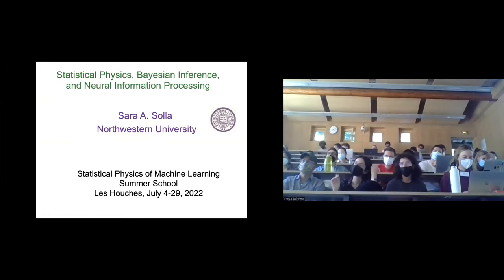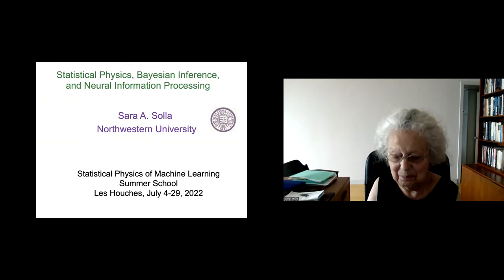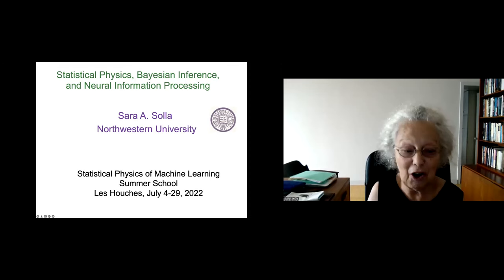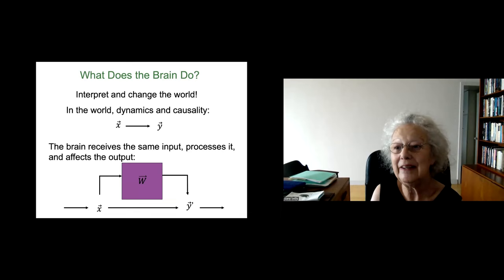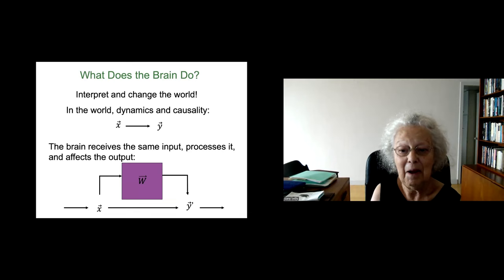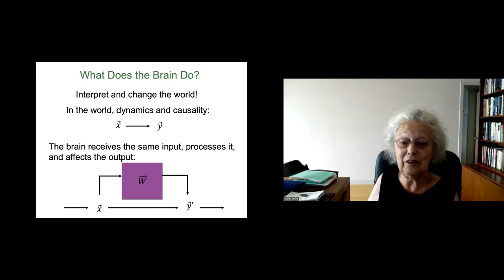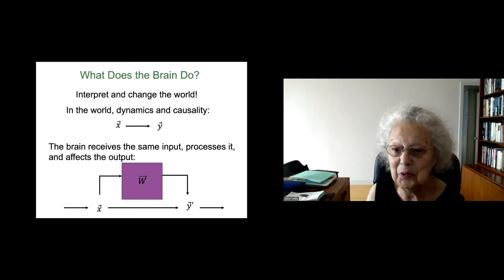Please interrupt me and ask questions. So what does the brain do? In the world there is a dynamics where y follows x, or there is a causality — y follows x in time or y follows x because x causes y. The brain is very interesting because it receives the same input x, but it is attached to a body that acts in the world, and our actions affect the output. It's a very interactive process between the brain and the world.